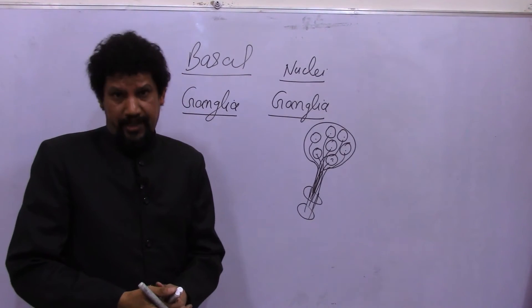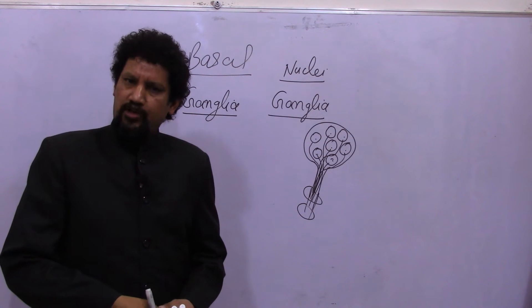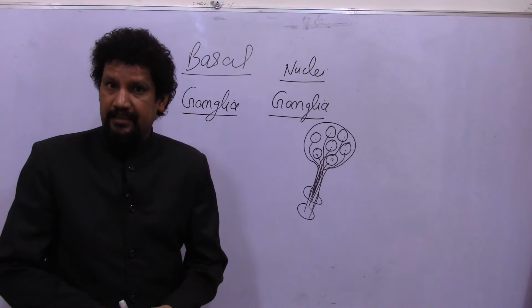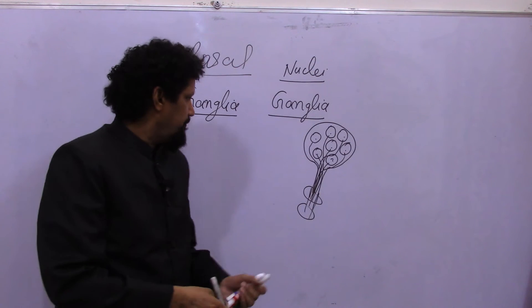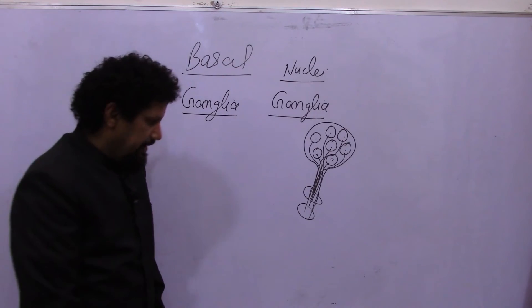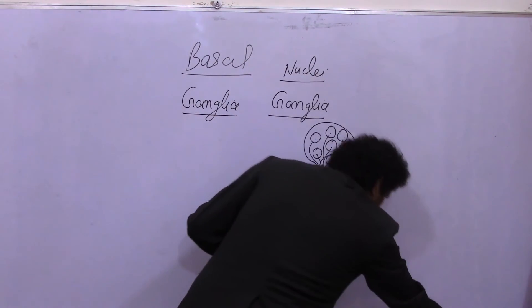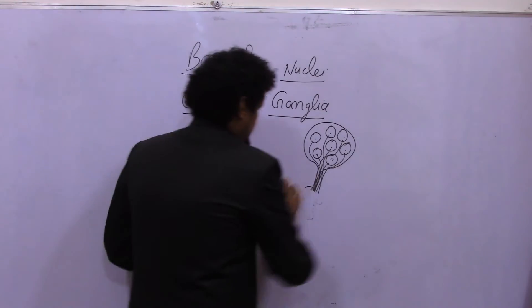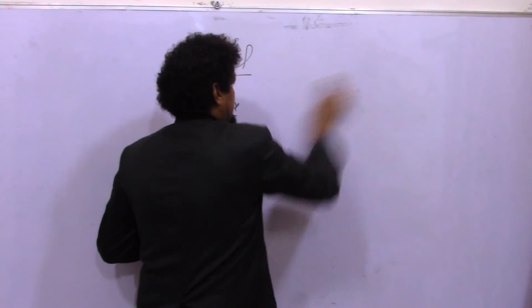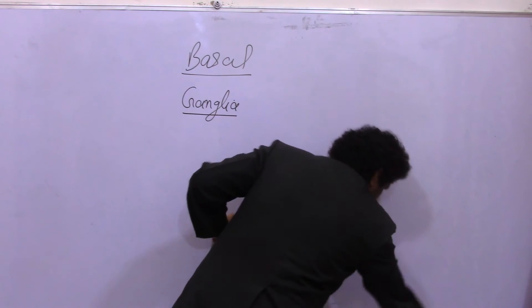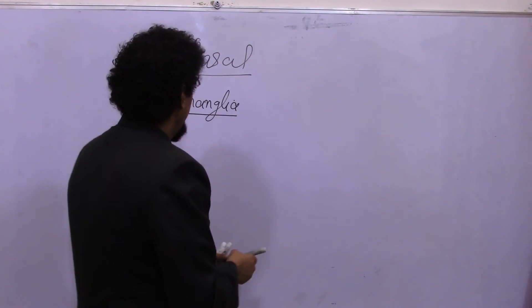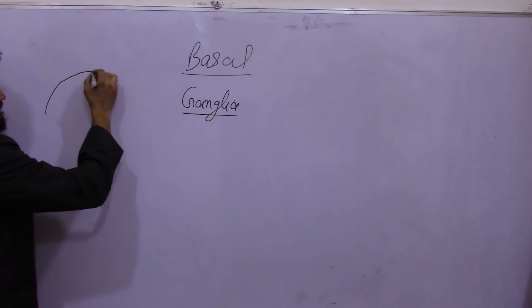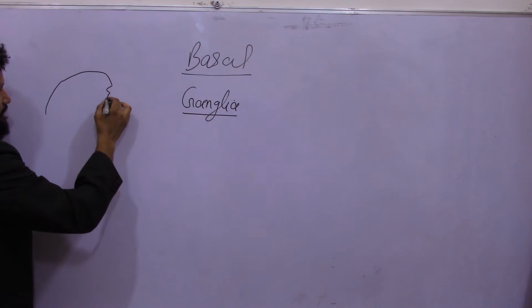In historical anatomy it is called basal ganglia, but in modern anatomy it is called basal nuclei. To avoid controversy and confusion, this lecture will use 'basal ganglia.' Basal ganglia is simply a collection of grey matter in the brain.